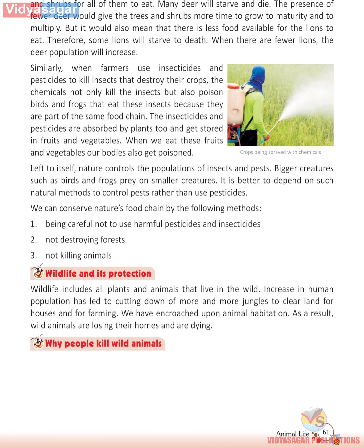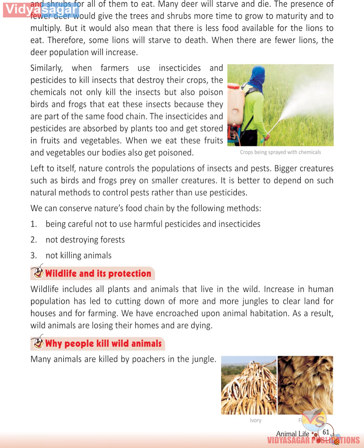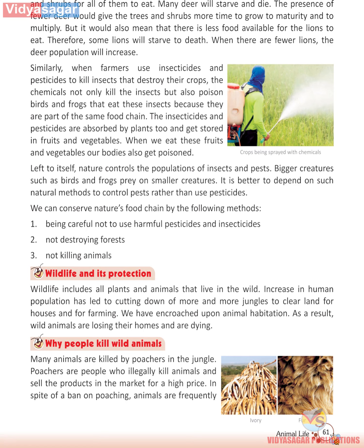Why do people kill wild animals? Many animals are killed by poachers in the jungles. Poachers are people who illegally kill animals and sell the products in the market for a high price. In spite of a ban on poaching, animals are frequently killed for their fur, skin, oil, bones, horns, teeth and other parts.